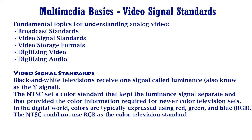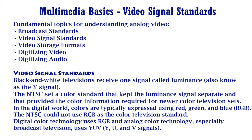Unfortunately, the NTSC could not use RGB as the color television standard because old black and white sets could not decode RGB signals. Instead, they had to send a Luminance signal for black and white sets and fill in the color information with other signals, which are called Hue and Saturation, also known as U and V signals. For this reason, digital color technology uses RGB and analog color technology — especially broadcast television — uses YUV, that is Y, U, and V signals.